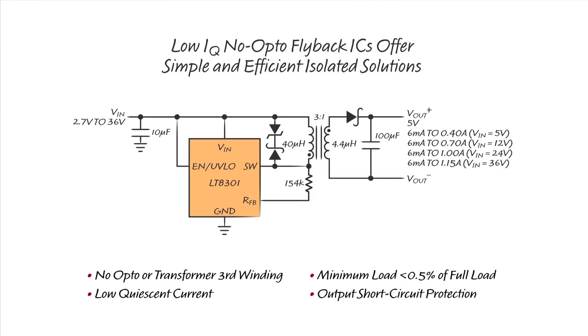The No Opto Flyback ICs feature low quiescent current, which improves light load efficiency and reduces no-load input standby current. The minimum load requirement is typically less than 0.5% of the full output. These ICs also feature output short-circuit protection.